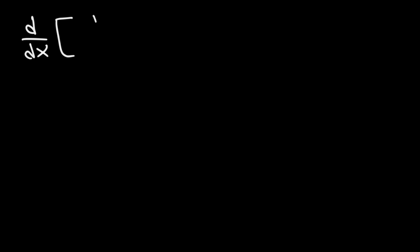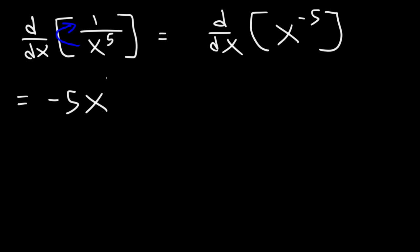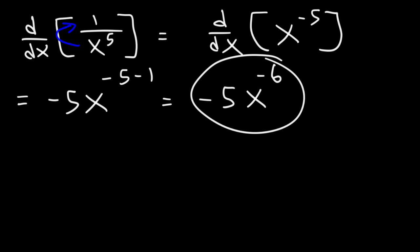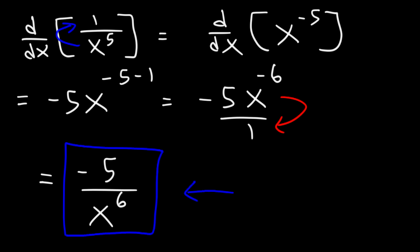Now what about the derivative of a rational function, like 1 divided by x raised to the 5th power? We rewrite it by moving x to the top, so the exponent flips from positive 5 to negative 5. Now we can use the power rule: n is negative 5, so it's going to be negative 5 times x raised to the negative 5 minus 1, which is negative 5x to the negative 6. Since we have a negative exponent, we move x back to the bottom. The final answer is negative 5 over x to the 6th power.